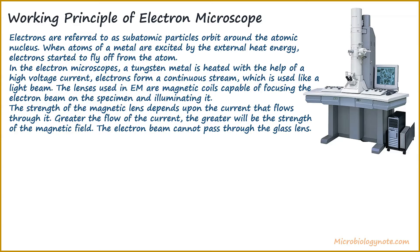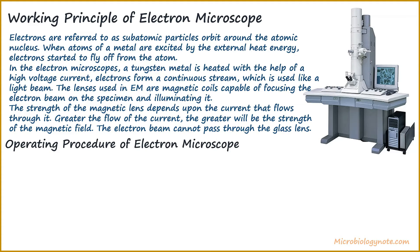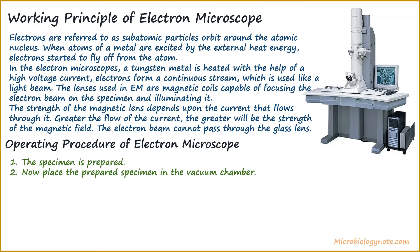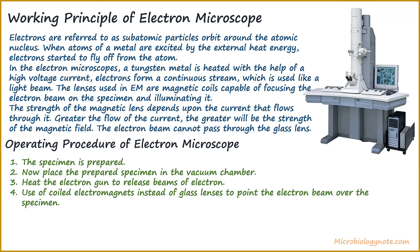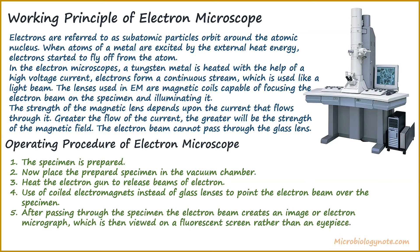Now we will talk about the operating procedure of an electron microscope. First of all, the specimen is prepared. Then the prepared specimen is placed within the vacuum chamber. Next, heat the electron gun to release beams of electrons. Use electromagnets instead of glass lenses to direct the electron beam over the specimen. After passing through the specimen, the electron beam creates an image, or electron micrograph, which is then viewed on a fluorescent screen rather than an eyepiece.